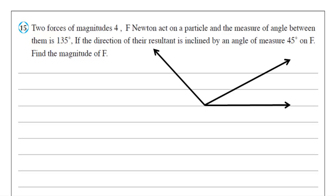Question number 15. Two forces of magnitudes 4 and F newtons act on a particle, and the measure of the angle between them is 135 degrees. If the direction of the resultant is inclined by an angle of measure 45 on F, find the measure of F.